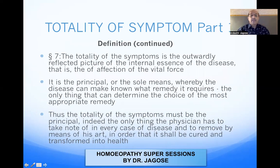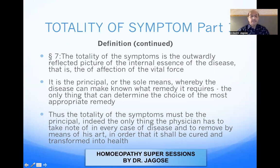Aphorism number seven states: the totality of symptoms is the outwardly reflective picture of the internal essence of the disease, that is, the affection of the vital force. Essence meaning the most important part or the core of the disease — that is, what are the characteristics, signs and symptoms. Basically, in totality, we have to see the outwardly reflective picture of the internal essence of the disease — that is, the important characteristic PQRS symptoms. It is the sole means whereby the disease can be made known and what remedy it requires.